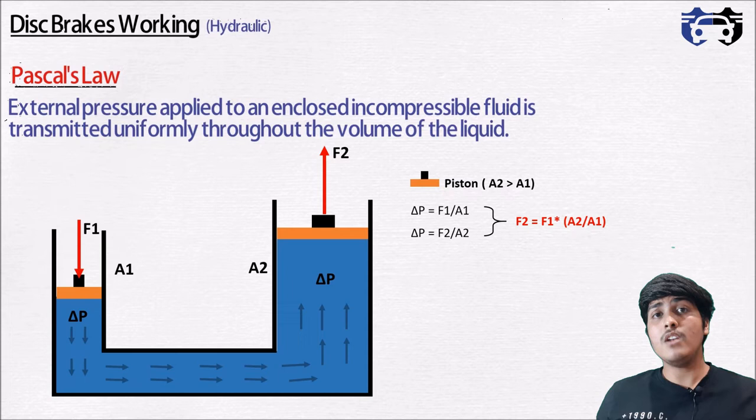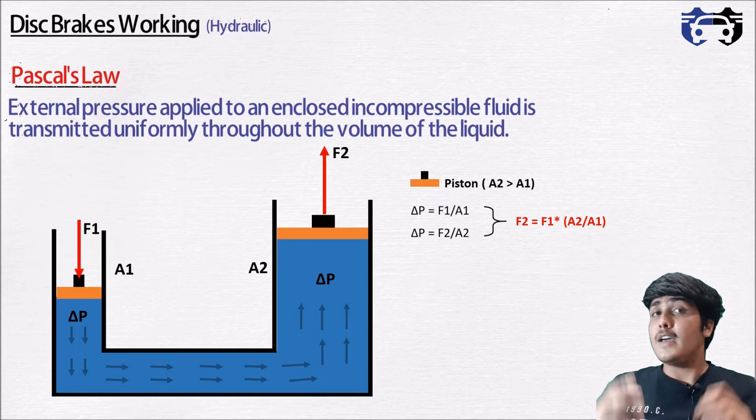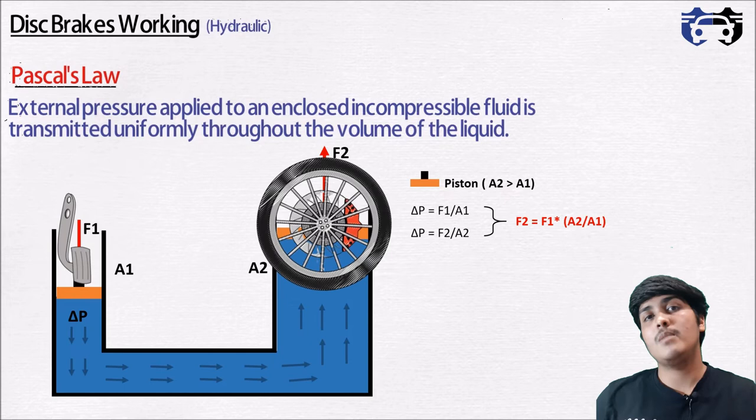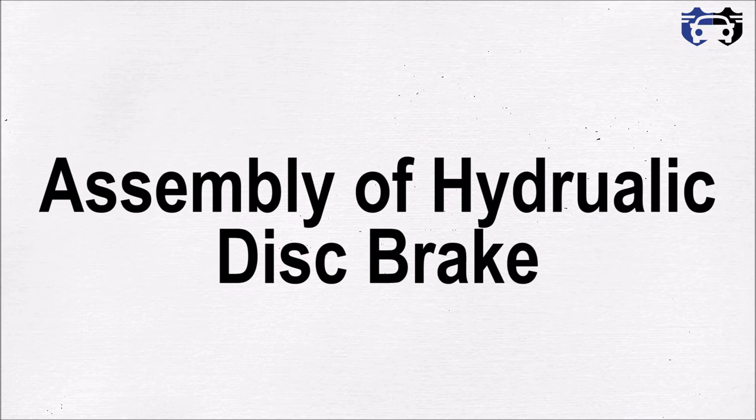This tells us that we can apply a small force F1 at point 1 and we will get a large force F2 at point 2. If we overlay this with the hydraulic brake system, then point 1 is the pedal side, point 2 is the wheel or brake side, and the fluid flowing here is called the brake fluid.